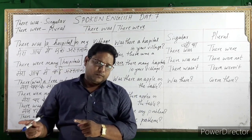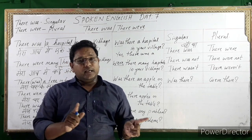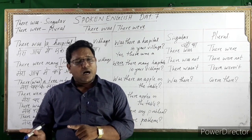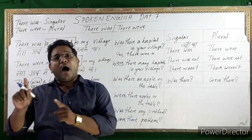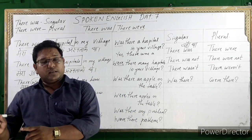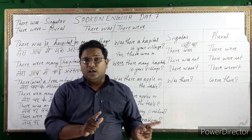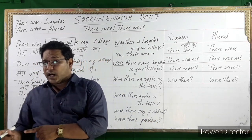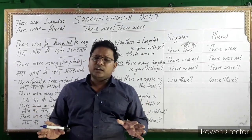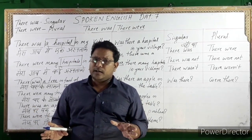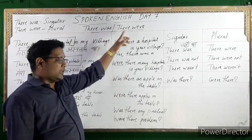'There is an apple' — there is one apple now. 'There was an apple' — there was one apple in the past. 'There are apples' — plural present. 'There were apples' — plural past. These are the differences. Students, it is very simple to understand. You must study 'there was' and 'there were' very well.